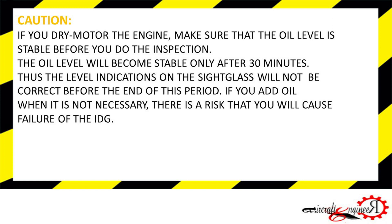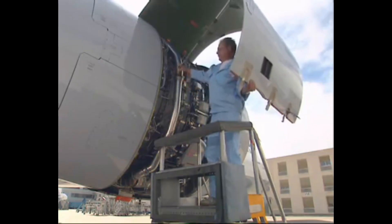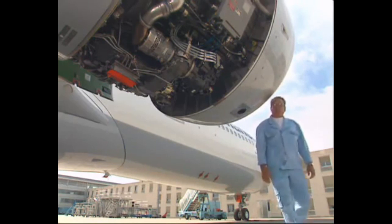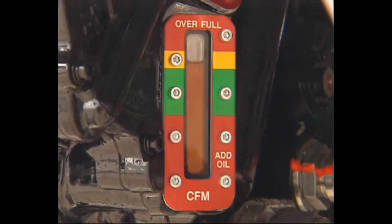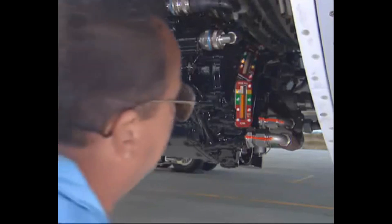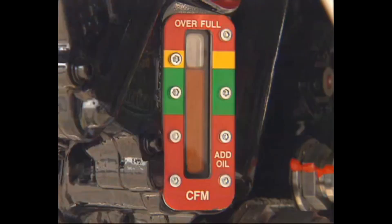Caution: if you dry motor the engine, make sure that the oil level is stable before you do the inspection. The oil level will become stable only after 30 minutes — thus the level indications on the sight glass will not be correct before the end of this period. If you add oil when it is not necessary, there is a risk that you will cause failure of the IDG. Let the oil level settle down for 5 minutes. The oil level might be slightly above the top of the green band due to thermal oil expansion; however, the oil level may also have dropped due to the presence of air in the system before the motoring.